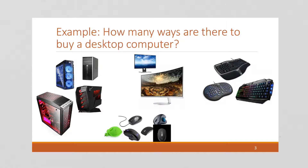Here's an example. Imagine that you wanted to build a desktop computer. The kind of mouse you select doesn't depend on what kind of keyboard you get. The type of display doesn't depend on what kind of box you get. They're all going to be independent. We're also simplifying this so that the case contains everything — the hard drive, GPU, CPU, all of that stuff — it's all self-contained. We're looking at a simplified view of this.